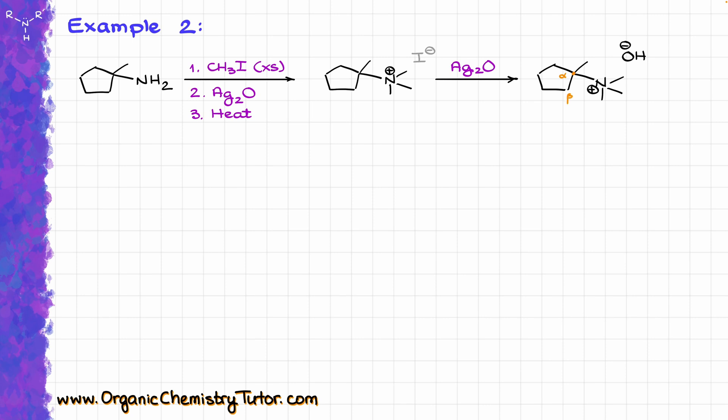The atom where the nitrogen is sitting is our alpha position. We have beta positions here, here, and over there. We're looking for the one with the least number of substitutions, which is my top right corner, so I'll show my hydrogens there. From this point, I can take my OH-, grab one of those protons, kick my leaving group out, and make the final product.